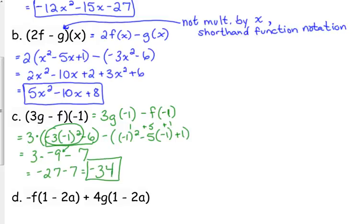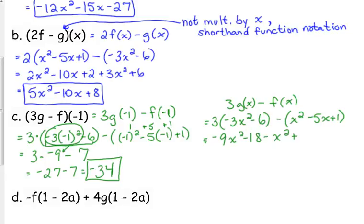Now, I could have also done it this way. I could have multiplied my g function by 3 and subtracted my f function. So, that gives me negative 9x squared minus 18 minus x squared plus 5x minus 1.